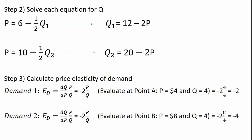And doing a similar thing for the second demand, but this time using slightly different prices and quantities at point B. The price is eight dollars and the quantity is four. So the price elasticity of demand at point B is minus four. And that's how you solve a price elasticity of demand problem starting with a graph. Hope you found this video helpful.